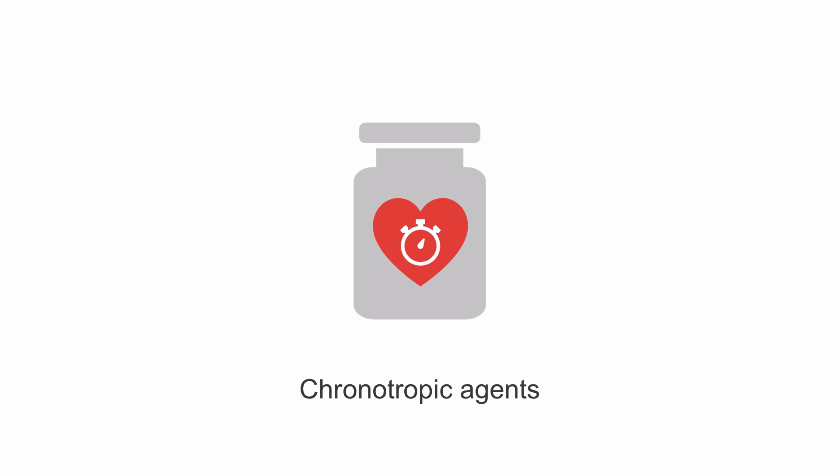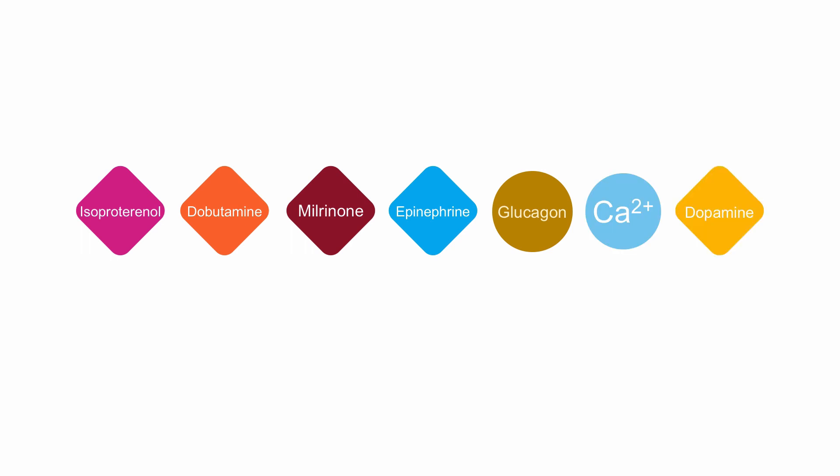Chronotropic agents may be useful if there's a reversible cause for the bradycardia. These include isoproteranol, dobutamine, milrinone, epinephrine, glucagon, calcium, or dopamine.